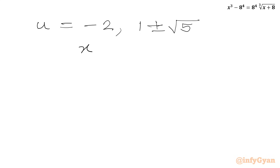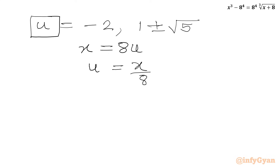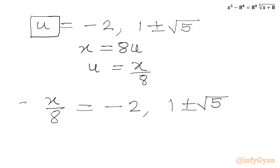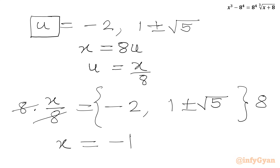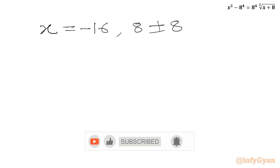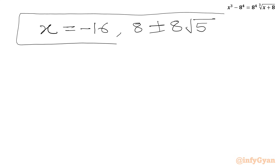Our original substitution was x = 8u, so u = x/8. Substituting back, we get x = 8 × (-2) = -16, and x = 8(1 ± √5). Therefore the final real solutions are x = -16 and x = 8(1 ± √5).